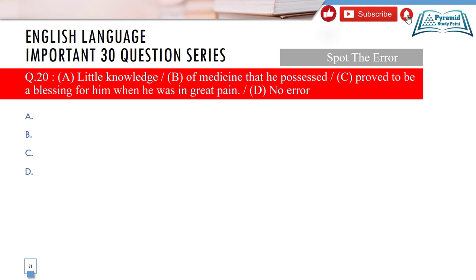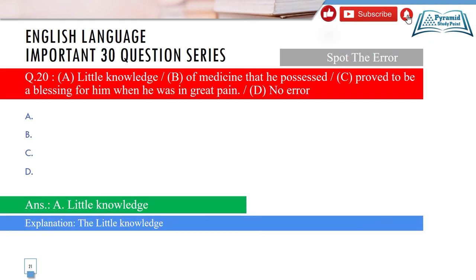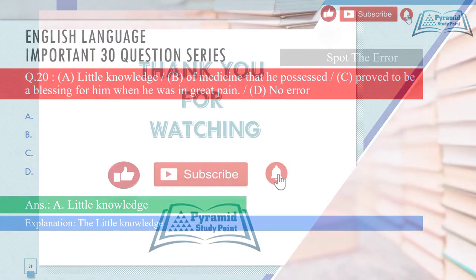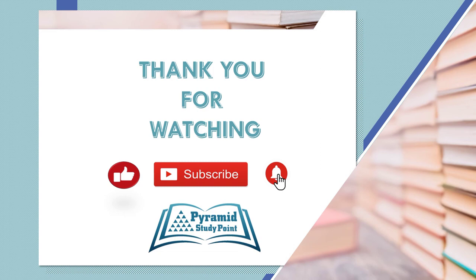Question 20 is spot the error. The sentence is: 'Little knowledge of medicine that he possessed proved to be a blessing for him when he was in great pain.' The error is in option A — 'little knowledge.' It should be 'a little knowledge,' since 'a little' has a positive connotation meaning some. This completes the 20-question series. Please subscribe to the channel and press the bell icon for notifications. Thank you for watching.